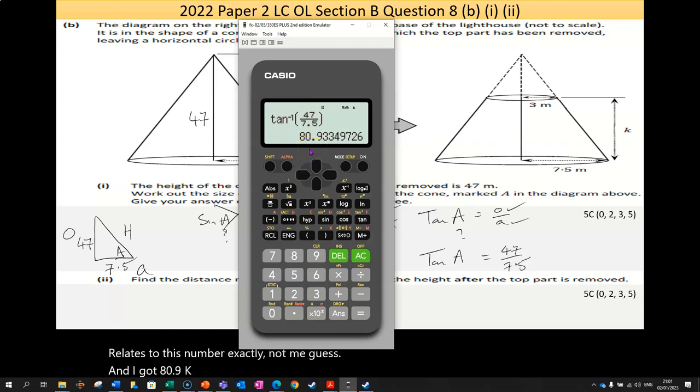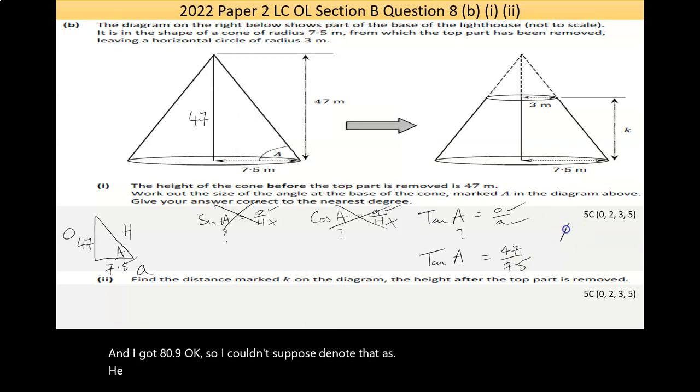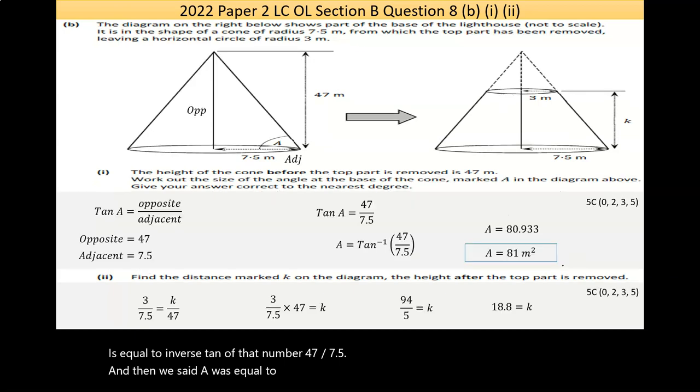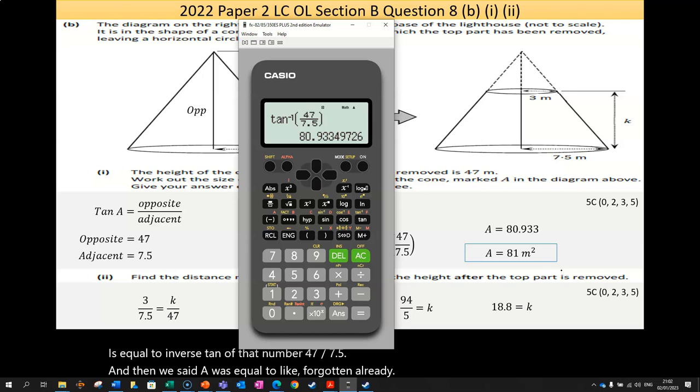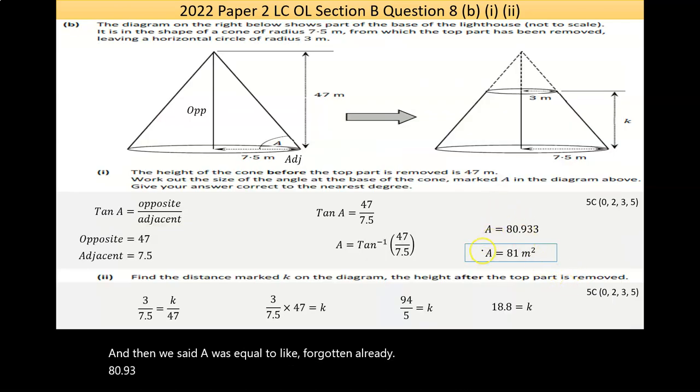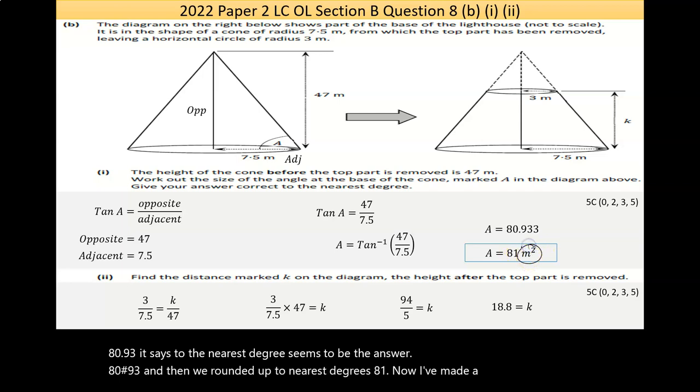It says to the nearest degree, seems to be the answer, 80.93, and then we rounded up to the nearest degree as 81. Now, I've made a mistake here. There should be degrees, because it's an angle. I don't know why I made that mistake. I'll fix it after.